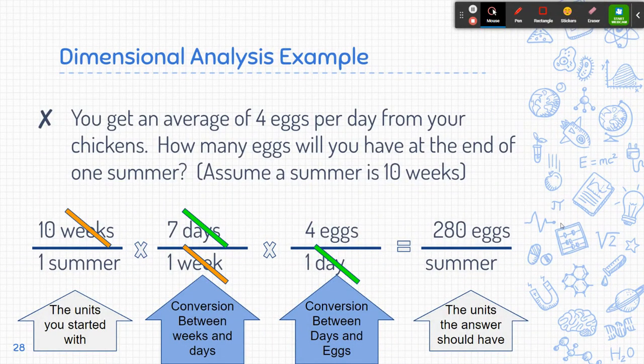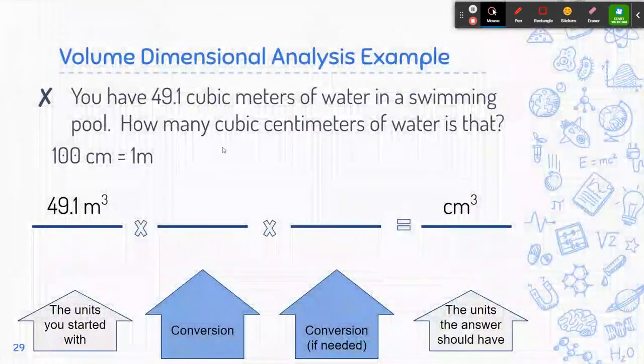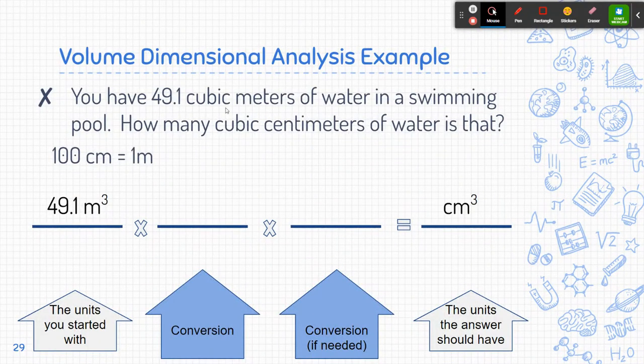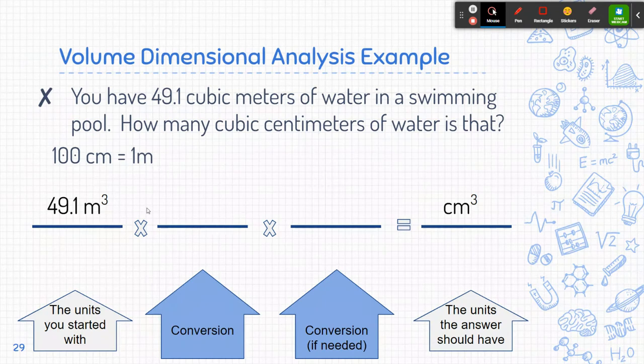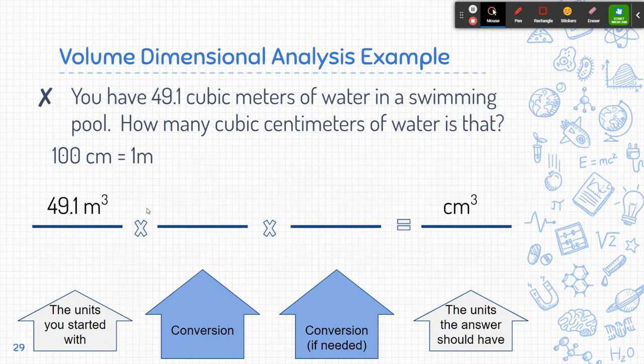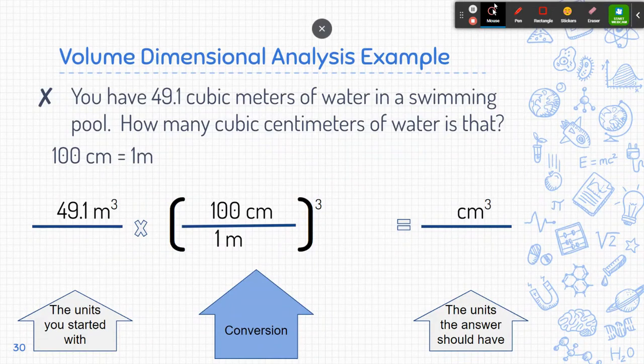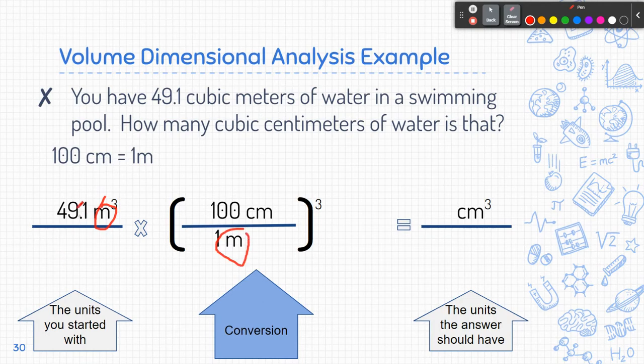Now this gets a little bit trickier if we're talking about volume. So if I have 49.1 cubic meters of water in a swimming pool, how many cubic centimeters of water is that? Okay, well, there's 100 centimeters is equal to 1 meter. And so I'm going to have to convert my centimeters, but it's not just centimeters. I'm going to have to do centimeters cubed. And so the way you do this is you think, okay, there's 100 centimeters per meter. And I know the meters have to go on the bottom because meters over here are in the top. So I have to get that on the bottom so they eventually will cancel out.